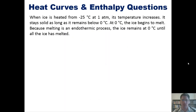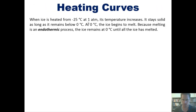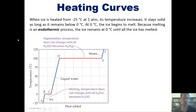So when ice is heated from negative 25 degrees Celsius at one atmosphere, its temperature rises. It stays solid as long as it remains below zero degrees Celsius. At zero degrees Celsius, the ice starts to melt. Because melting is an endothermic process, the ice stays at zero degrees C until all the ice has melted, as shown in the heat curve diagram. Starting at -25°C, the temperature gradually rises while it stays solid.